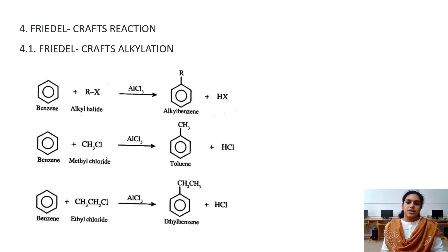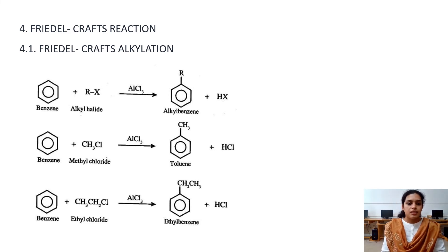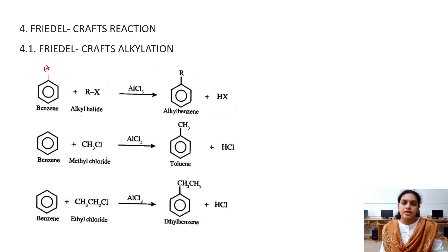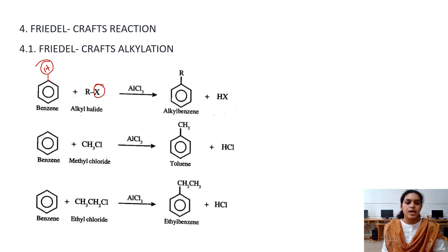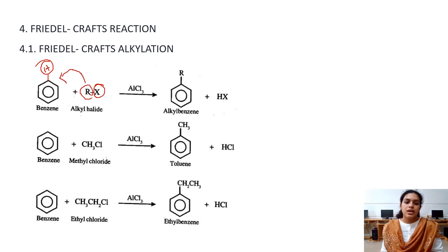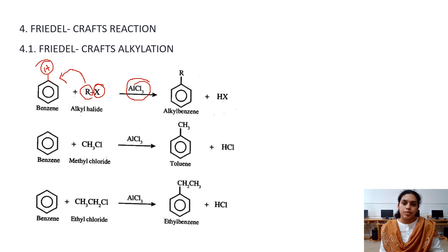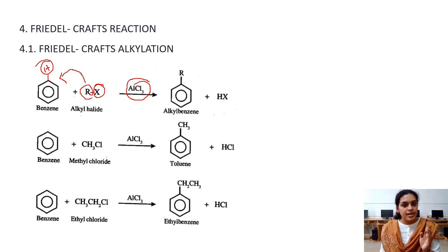The fourth example is Friedel-Crafts reaction, divided into alkylation and acylation. In Friedel-Crafts alkylation, benzene reacts with an alkyl halide in the presence of catalyst AlCl3. HX is eliminated and the R group attaches to the benzene ring. For example, reacting benzene with methyl chloride gives toluene; with ethyl chloride gives ethylbenzene.